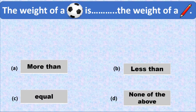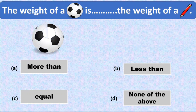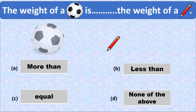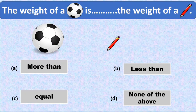As we all know very well, the weight of a football is more than the weight of a pencil. When we hold them, we can feel the weight of a football which is more than the weight of a pencil. So option A, more than, is the correct option here and we put a tick mark at option A.